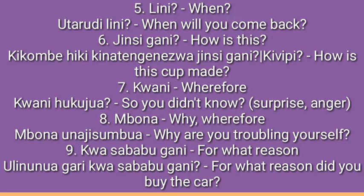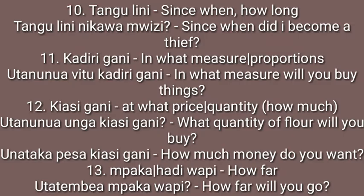Number eight is 'mbona,' meaning 'why' or 'where for.' Example: 'mbona unajisumbua?' — why are you troubling yourself? Number nine is 'kwasababu gani,' meaning 'for what reason.' Example: 'ulinunua gari kwasababu gani?' — for what reason did you buy the car? This is more formal than 'kwanini,' because you are specifically inquiring for a reason — for what reason — instead of just asking why.